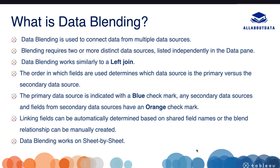The primary data source is indicated by a blue check mark and the secondary data source is indicated by an orange check mark. Data blending works sheet by sheet, meaning in every sheet we can change its primary data source and secondary data source. Now, why do we need data blending when we already have relationships and joins?